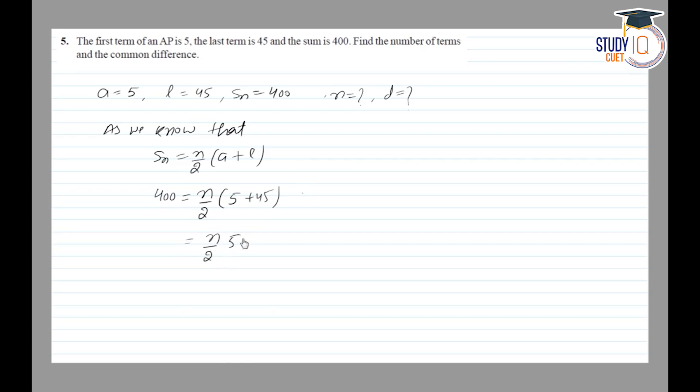This becomes n/2 × 50 = 400. Solving this equation, we get n = 16. So we have found n = 16. Now let's find the common difference.